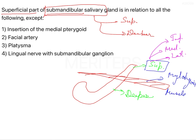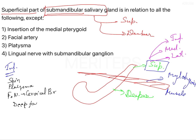The inferior surface has relations with the skin, the platysma, the cervical branch of the facial nerve, the deep fascia, the facial vein, and submandibular lymph nodes. These are the relations of the inferior surface.